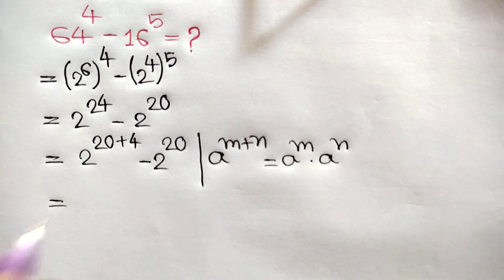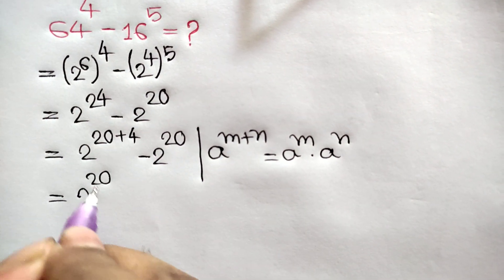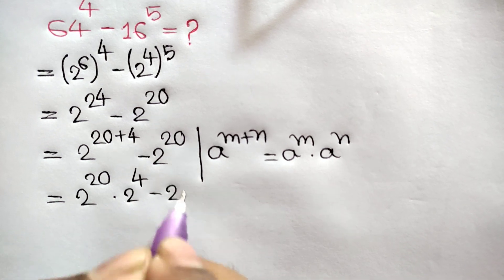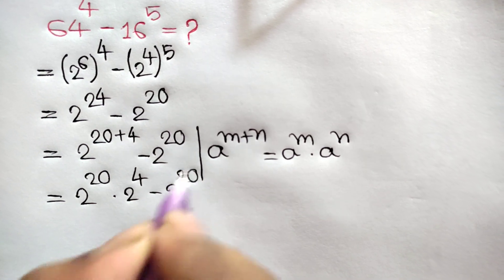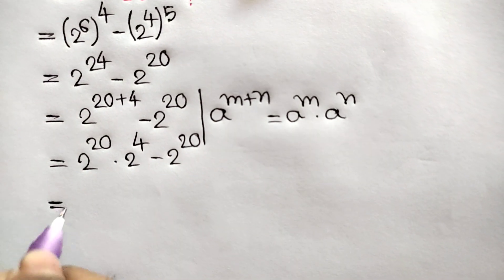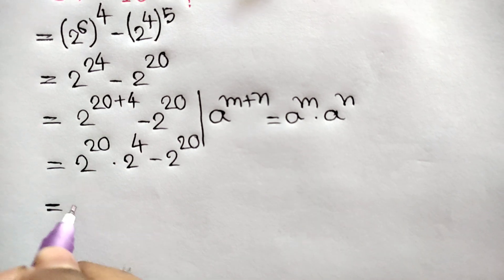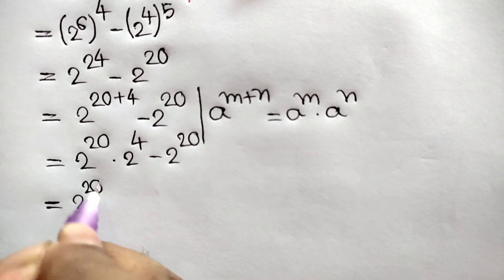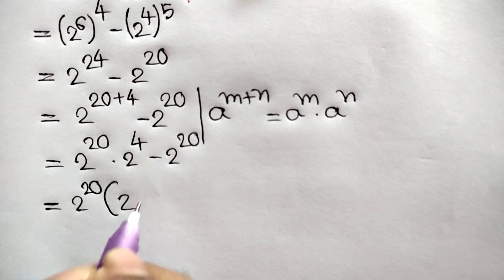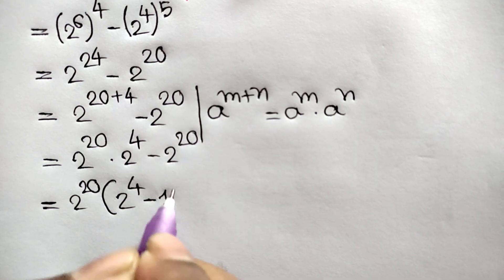n. So we can write here 2 to the power 20 times 2 to the power 4, minus 2 to the power 20. Taking out the common factor 2 to the power 20, we will get 2 to the power 20 times (2 to the power 4 minus 1).